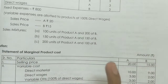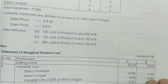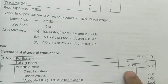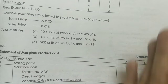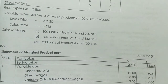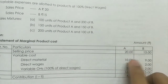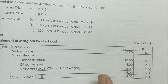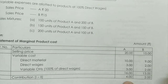We add the variable cost to get the marginal cost. So the marginal cost per unit is 16 — that is 10 plus 3 plus 3 — and 13 — that is 10 plus 2 plus 3. We have the contribution as selling price minus variable cost, giving us the contribution per unit.